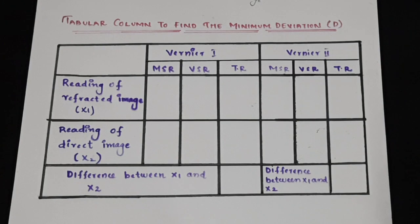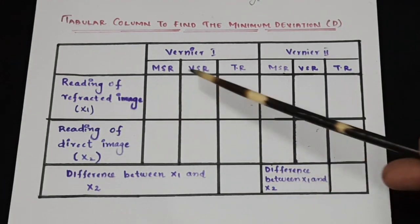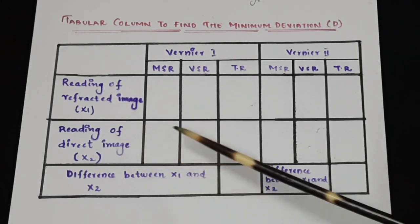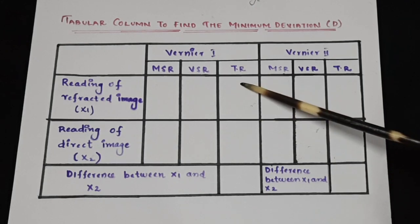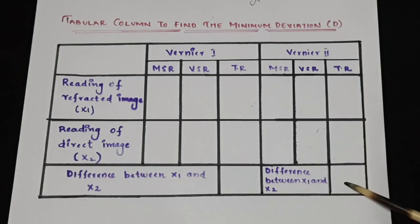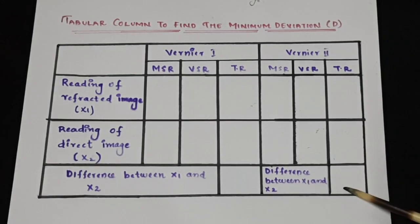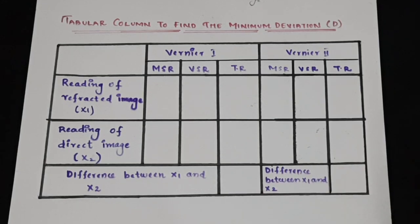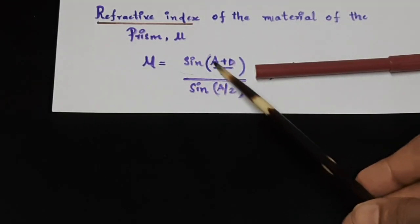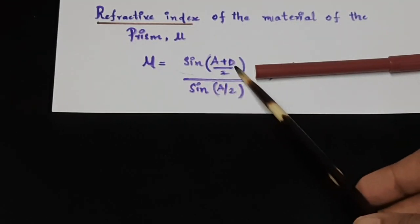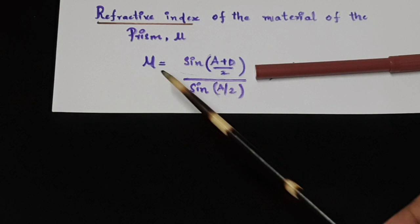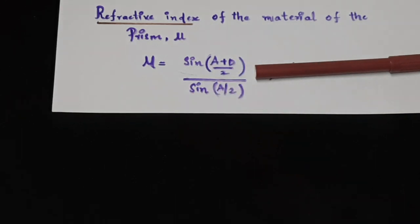In the observation column, take the reading of the refracted image — vernier 1 and vernier 2 — and then the direct image reading for vernier 1 and vernier 2. The difference between these two readings gives the angle of minimum deviation. The average of the two determinations can be taken as capital D, the angle of minimum deviation. Once D is measured, we can find out the refractive index mu of the material of the prism using the formula: mu = sin((A + D) / 2) / sin(A / 2).